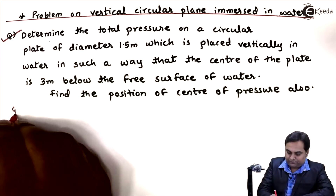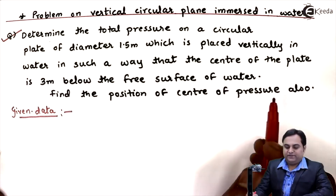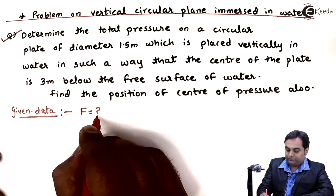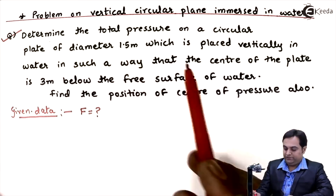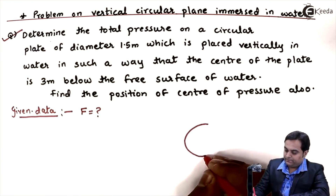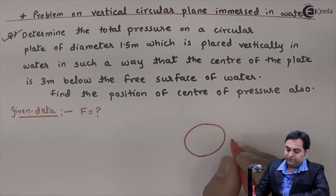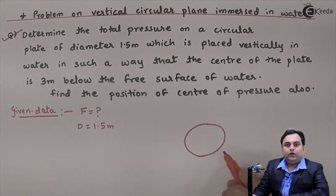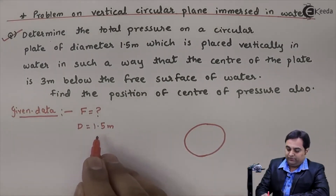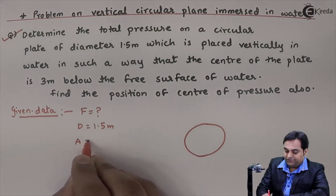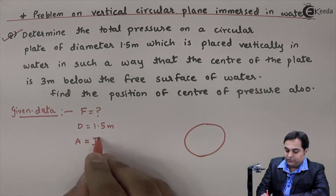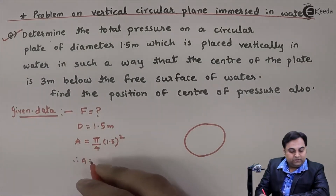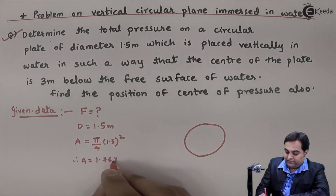Let us write the given data. We need to determine the total pressure, denoted by capital F, on a circular plate of diameter 1.5 meter. So D = 1.5 meter. Once we know the diameter, we can calculate the area: Area = π/4 × D² = π/4 × (1.5)² = 1.767 meter square.